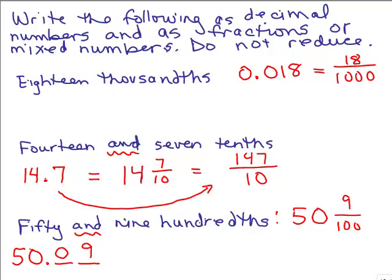Which really means 50 and 9 hundredths. Best to read it that way to really reinforce the idea that that's what this means. 50.09 means 50 and 9 hundredths. So let me just write this out, 50 and 9 hundredths.